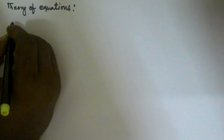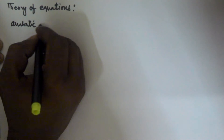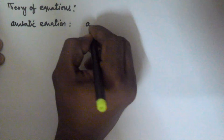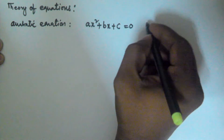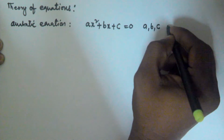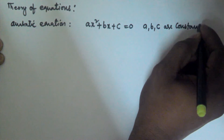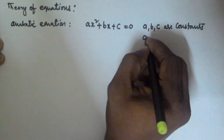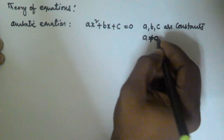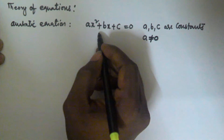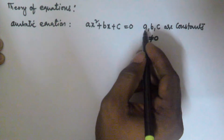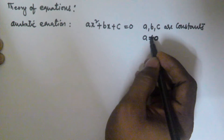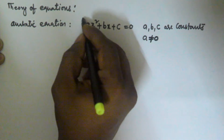A quadratic equation is in the form ax² + bx + c = 0, where a, b, c are constants and a is not equal to 0. If a given equation is in this form with a, b, c as constants and a ≠ 0, then that equation is called a quadratic equation.